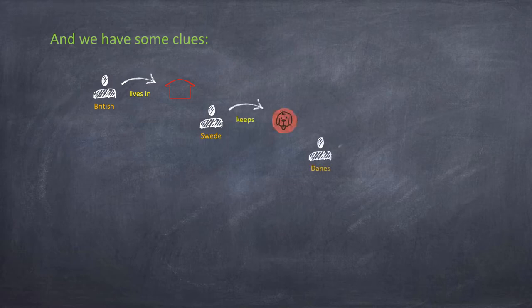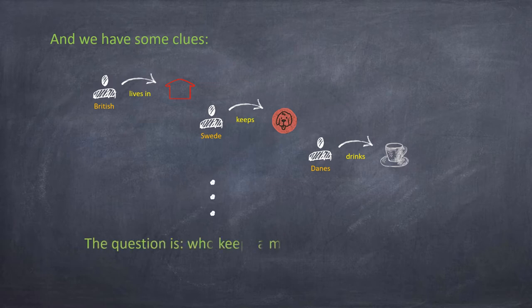And we have some clues. First, the British live in a red house. Second, the Swede keeps a dog. Third, the Danish drinks tea. Finally, the question is: who keeps the mouse?